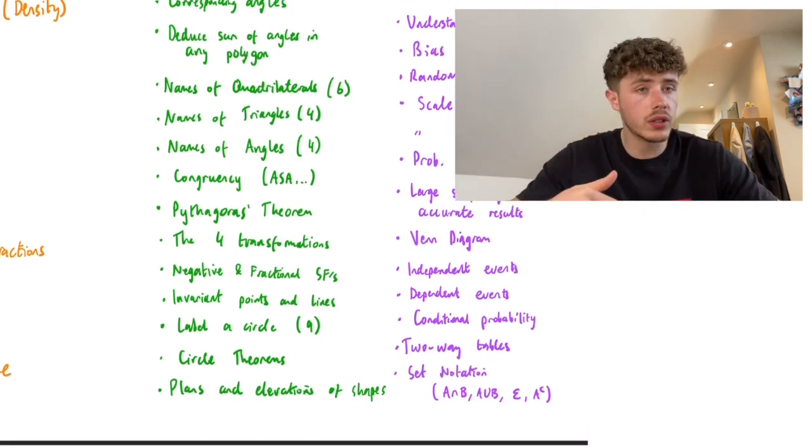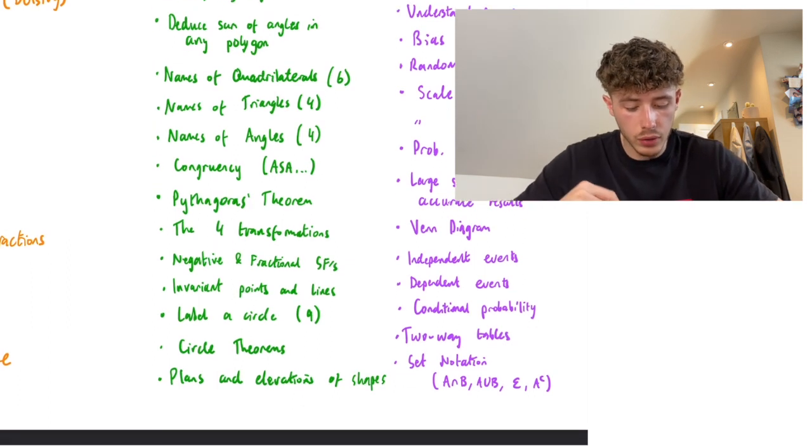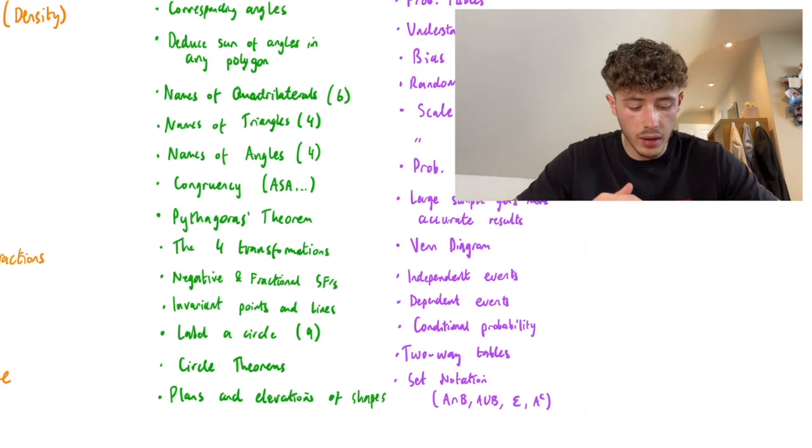Pythagoras's theorem, the four transformations - let me know down below what they are. Negative and fractional scale factors within the enlargements of that. Invariant points and lines, what does it mean?